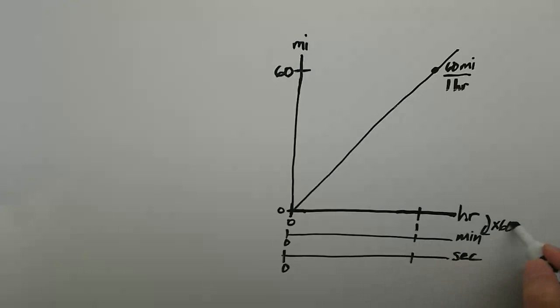Because there are 60 minutes in 1 hour, 1 hour times 60 is 60 minutes. Because there are 60 seconds in a minute, 60 minutes times 60 is 3600 seconds, so 1 hour equals 3600 seconds.